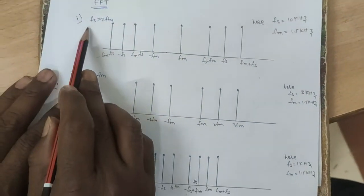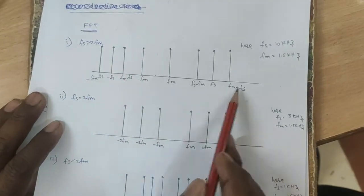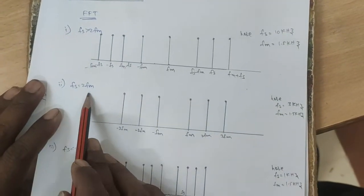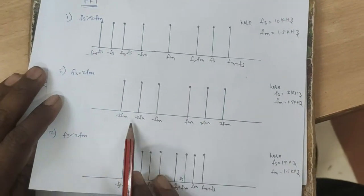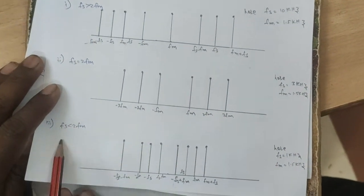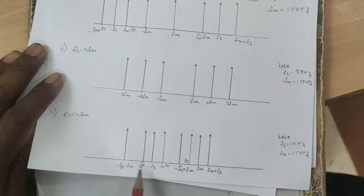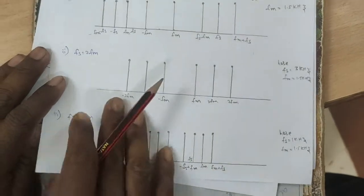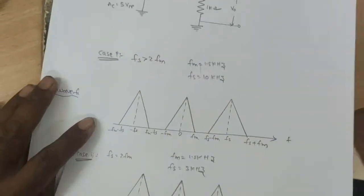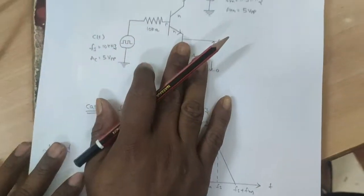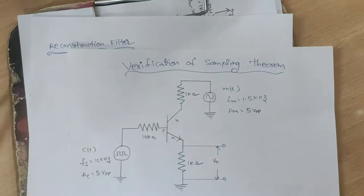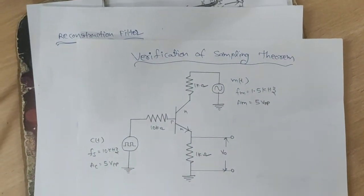The waveform for Fs greater than 2Fm looks like this, the Fs equal to 2Fm condition looks like this, and the Fs less than 2Fm condition looks like this. The same circuit is connected on the breadboard.